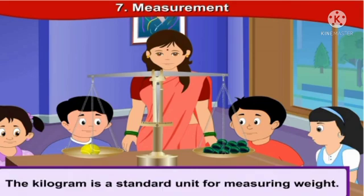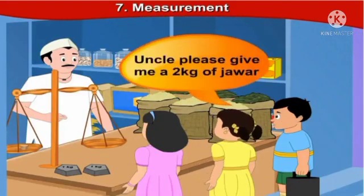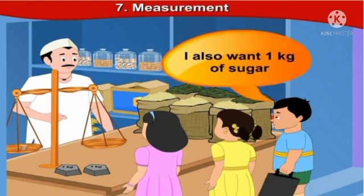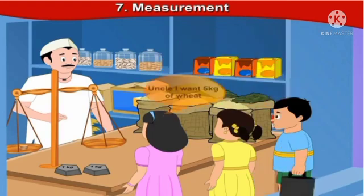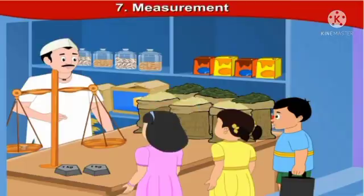Children, when you go to a shop, you buy things in standard units. Uncle, please give me 2 kg of jowar. Uncle, I also want 1 kg of sugar, says Tony. Uncle, I want 5 kg of wheat, says Salma.